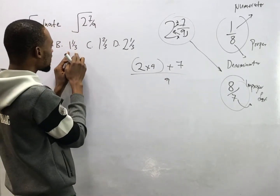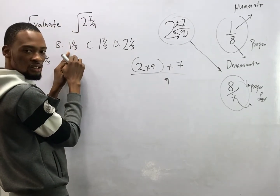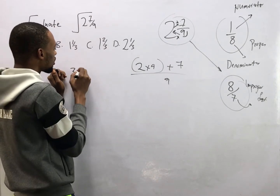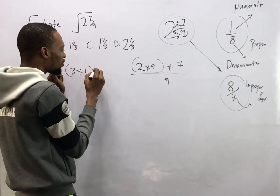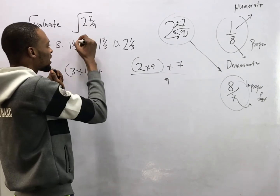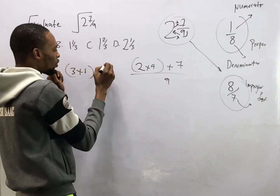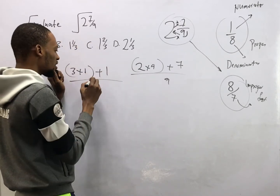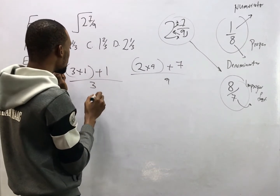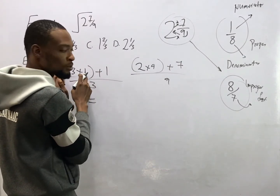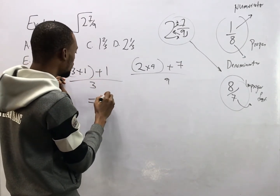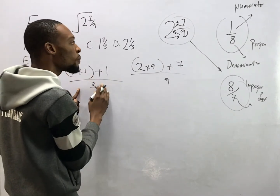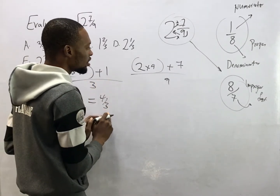This implies that if you are converting 1 whole number 1 over 3 to an improper fraction, we say 3 times 1, then add what is at the top which is 1, all over 3. So 3 times 1 is 3, plus 1 gives 4. So here we have 4 over 3. Converting this to improper fraction, the answer is 4 over 3.